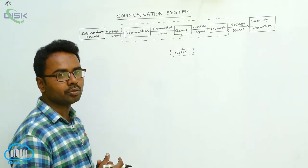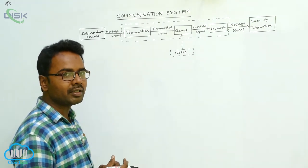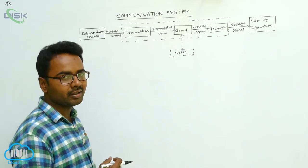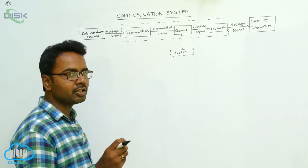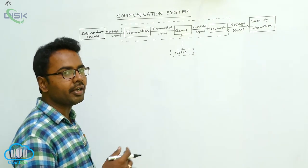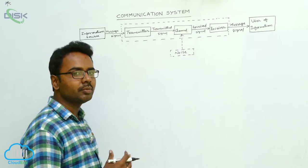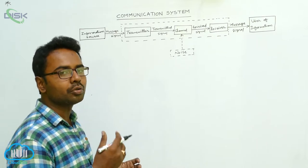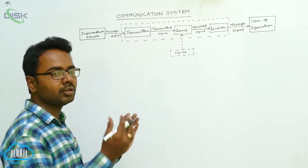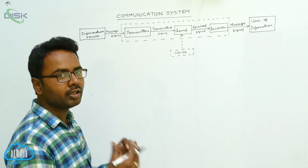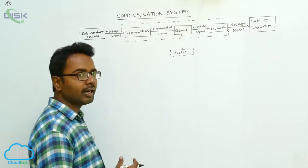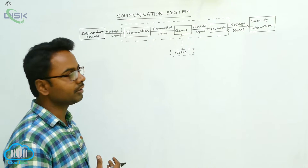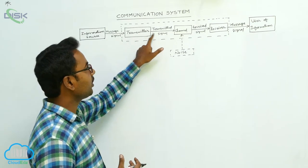The transmitter converts message signals into a suitable form for transmission. We cannot transmit message signals directly — for example, voice signals from a person singing cannot be transmitted to long distances directly. So we need a device called the transmitter. The transmitter converts the message signals into a suitable form for transmission, and at its output we get the transmitted signals.